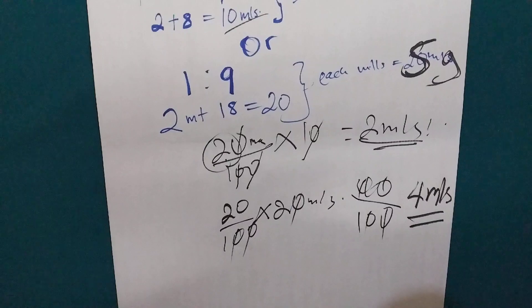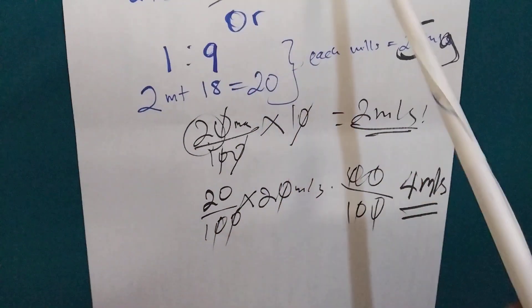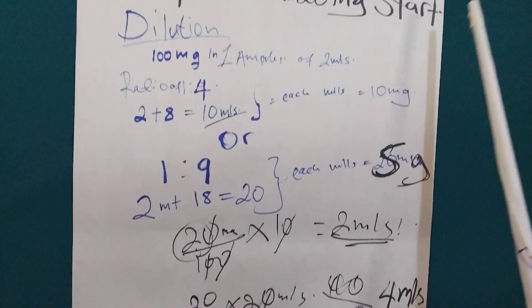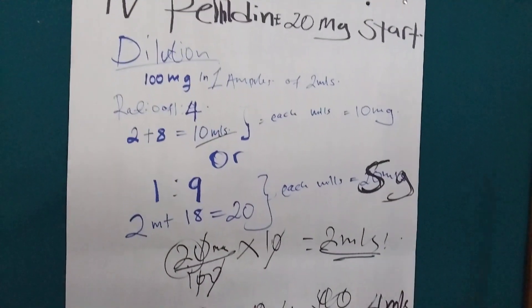So, that is how we give the prescribed amount of IV Pethidine 20 milligrams stat. This one we will give slowly.